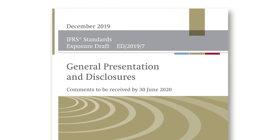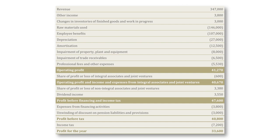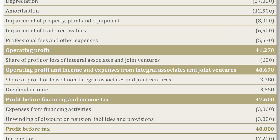One important set of proposals in our exposure draft is the introduction of three new subtotals in the income statement. I believe that this very important proposal will give much better structure to the income statement and will create a lot more comparability for investors. The fact that we now ourselves define three new subtotals will probably decrease the necessity for companies to use non-GAAP measures.